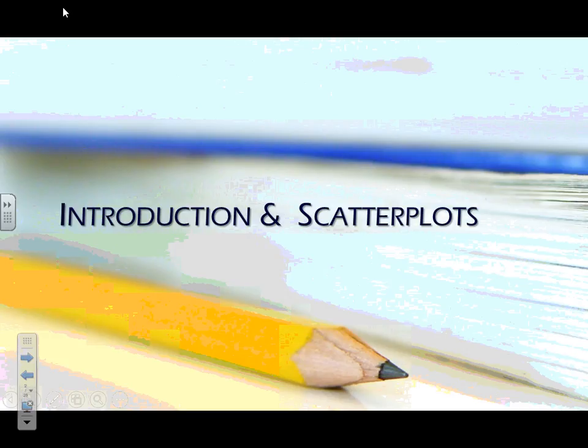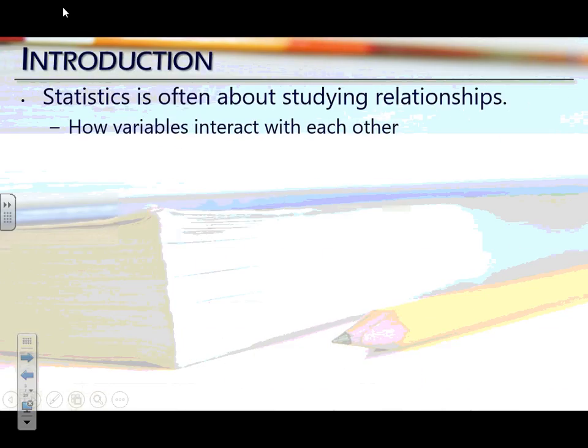How do we describe scatterplots? How do we create them? The reason scatterplots are important is that statistics is often not about studying one variable. In chapters 1 and 2, everything we did only dealt with one variable — how does this one variable distribute across given values? But in statistics, a lot of times the more interesting problems are where we start comparing variables and how they relate to one another.